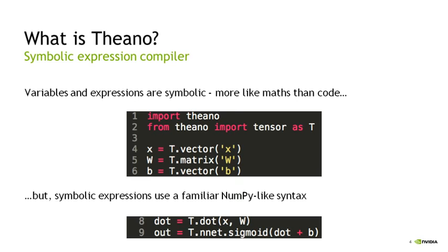To make it a little clearer — what do I mean by a symbolic maths library or symbolic expression compiler? Rather than requiring that variables are defined with numeric data from the start, in Theano you define your variables like you would in algebra — you give them a letter or a name. Here we see a vector called X, a matrix called W, and another vector called B. You can define symbolic expressions using these variables with a syntax very familiar if you know NumPy. We can do the dot product of vector X and matrix W, then apply a sigmoid activation function to that result summed with the B vector.